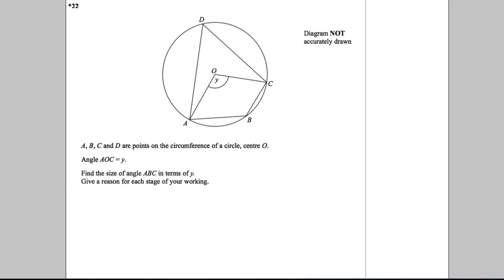Notice here we've got a star sign, so the quality of our written content is going to be assessed. We've got to write out our explanations properly. We have points A, B, C, D on the circumference of a circle, and angle AOC is equal to angle y. We're asked to find the angle ABC in terms of y, giving a reason for each stage of your working.